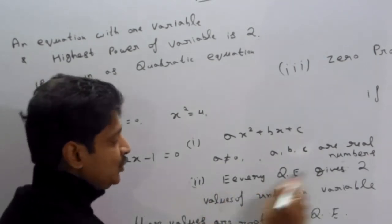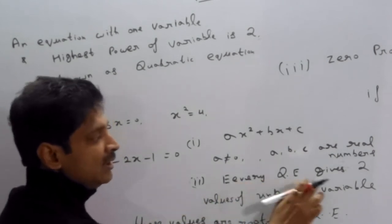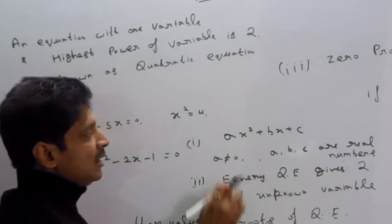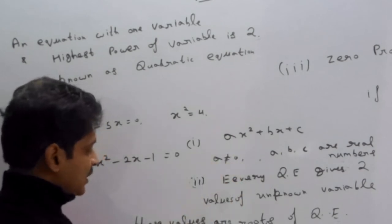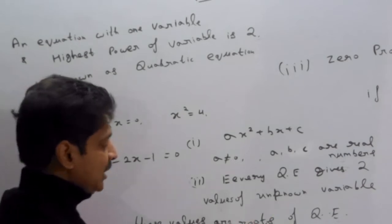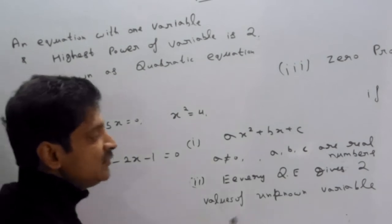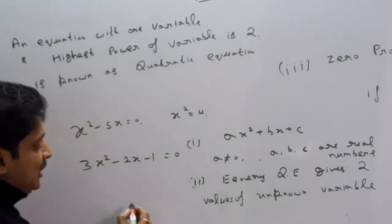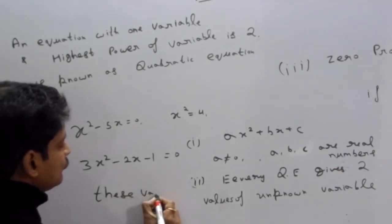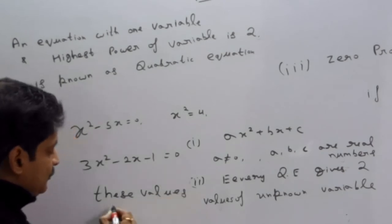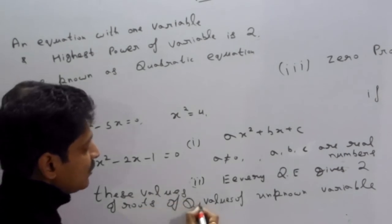Second point: every quadratic equation gives two values of the unknown variable. Unknown variable yaha pe kya hai? x — x is the unknown variable. These values are called the roots of the quadratic equation.